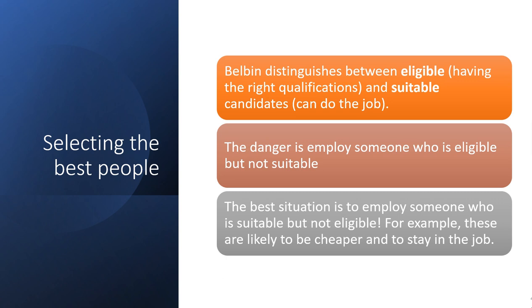Selecting the best people: Belbin distinguished between eligible and suitable candidates. Eligible refers to those who have the proper qualification — for example, a faculty should be a postgraduate, have NET/SET, other degrees, or a PhD. That is the qualification. The second is a suitable candidate for the job.